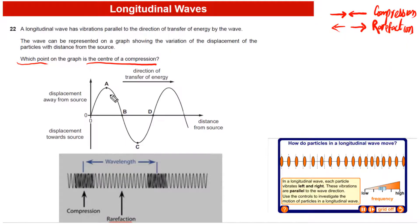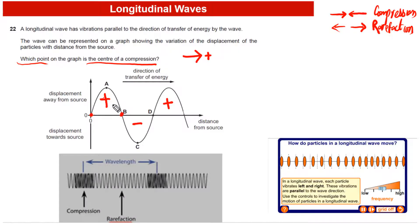Looking at the graph, displacement is positive, then negative, then positive, then negative. Taking rightward as positive, particles between O and B are moving to the right, and between B and D displacement is negative, meaning particles are moving to the left. This allows us to find the center of compression.